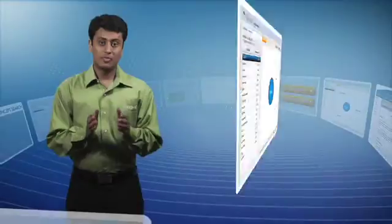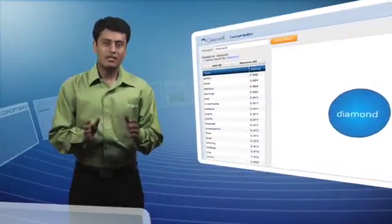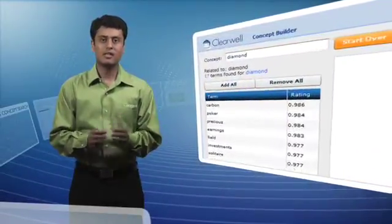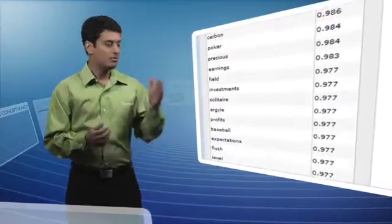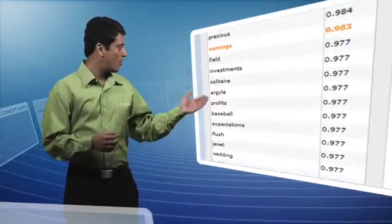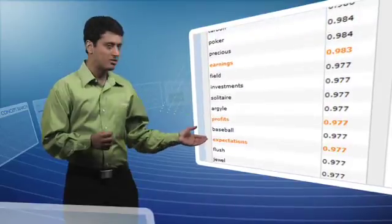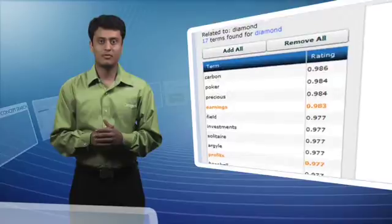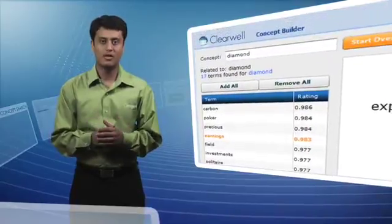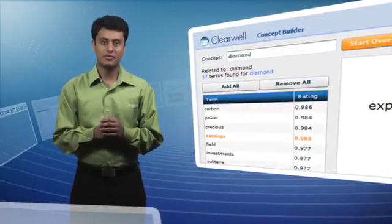With Concept Search Preview, you can eliminate these irrelevant documents by selecting only the terms that are relevant to your search. For example, earnings, profits, and expectations. As a result, concept searches are much more accurate, resulting in fewer false positives, thus significantly reducing the cost of review.